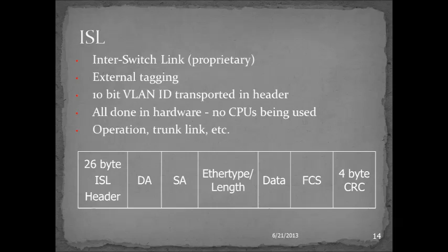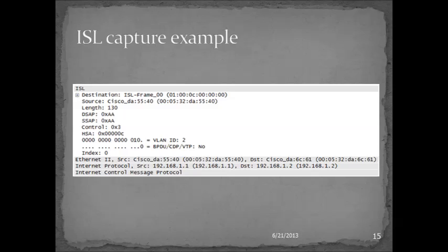The other non-industry-standard, proprietary solution we see sometimes is Cisco trunking. Cisco has their Inter-Switch Link, or ISL, tagging. If you have a Cisco collection of devices or you're a Cisco shop, you have the capability to use a different sort of tagging. The big difference is that ISL is an external tag as opposed to internal — the Ethernet frame doesn't have this inserted inside; it's actually prepended to the Ethernet frame.